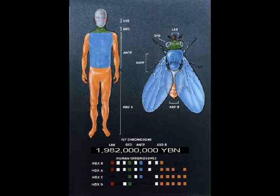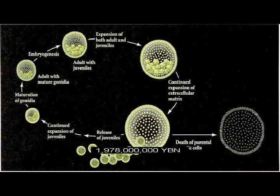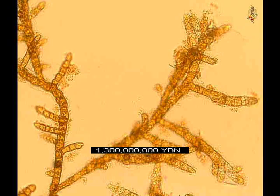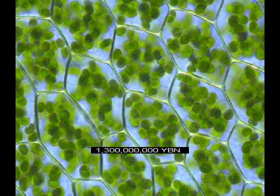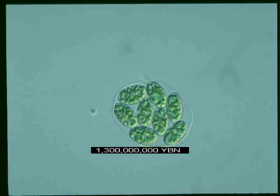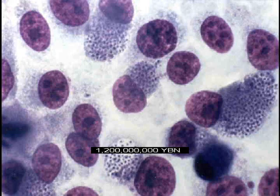A captured bacterium becomes a mitochondrion. Homeobox genes regulate the building of major body parts. Differentiation in multicellular eukaryote — gamete or spore cells and somatic cells. Start of death by aging. End of banded iron formation. Multicellular eukaryotes. Cyanobacteria become plastids in a eukaryotic cell. First plant. First fungi.